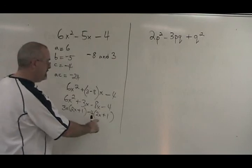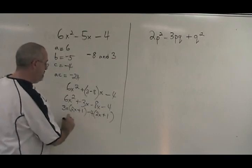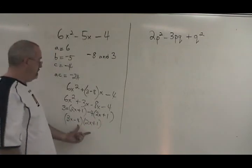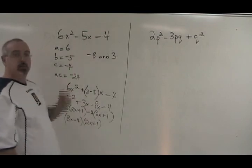We have achieved what we want, which is that these two brackets are the same. We can rewrite this 3x minus 4 in a bracket times 2x plus 1. And we have our final answer. If we multiply these together, we will get our original question.